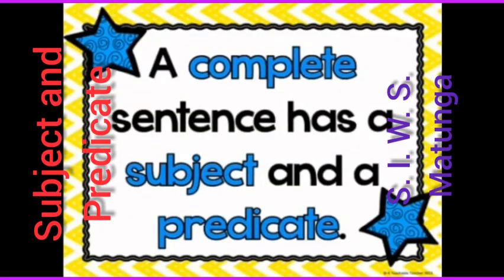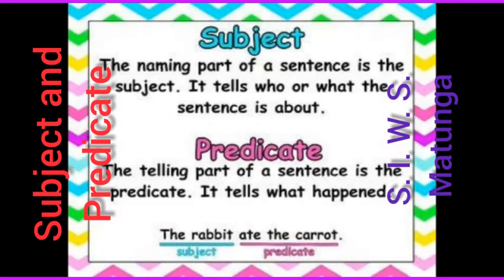A complete sentence has two parts: a subject and a predicate. The naming part of a sentence is the subject. It tells who or what the sentence is about. The telling part of a sentence is the predicate. It tells what happened.